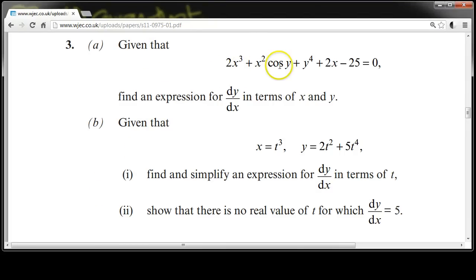Given that 2x cubed plus x squared equals y plus y to the 4 plus 2x minus 25 equals 0, find an expression for dy/dx in terms of x and y.